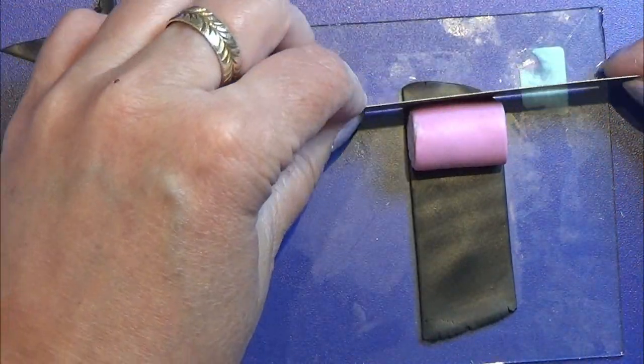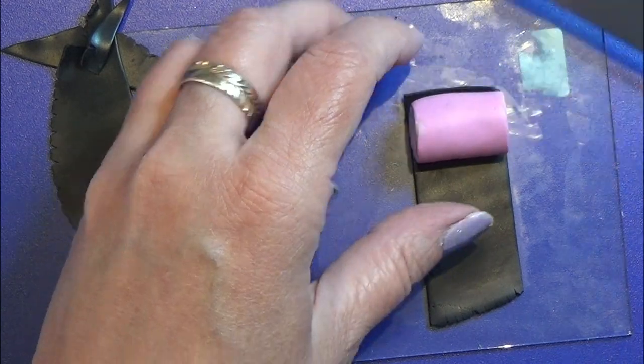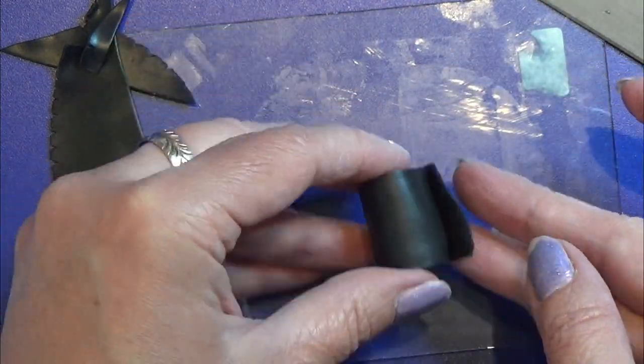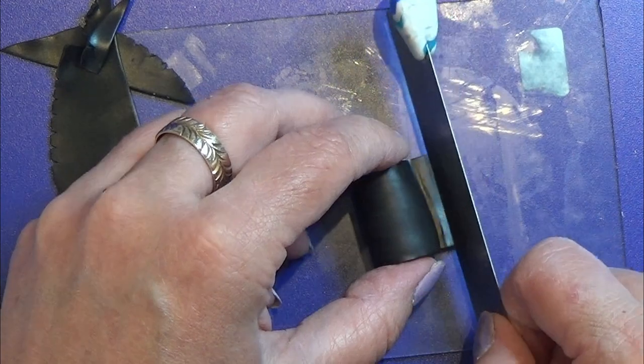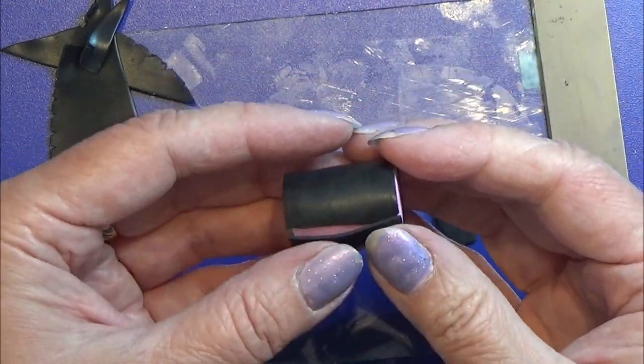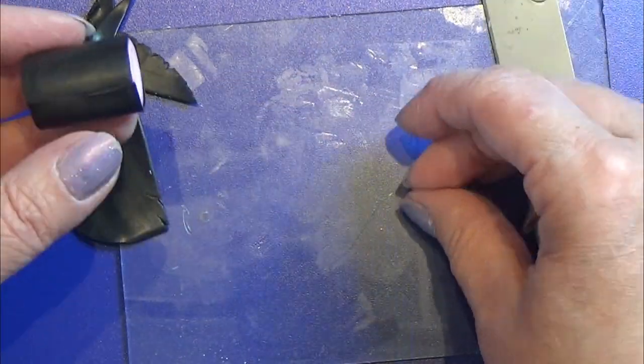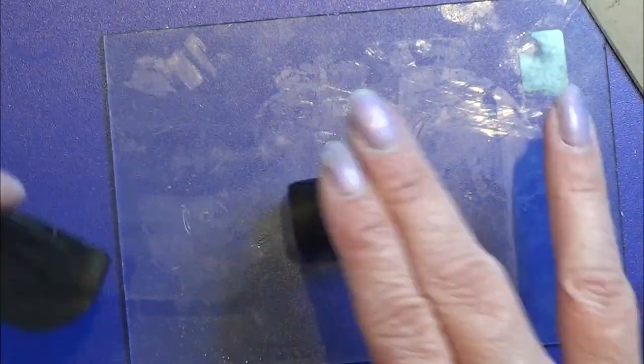I rolled out a black piece of clay on my pasta machine and this is on the smaller settings. I don't want it to be too thick, and do not let it overlay when you roll it around this little bullseye.